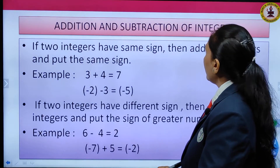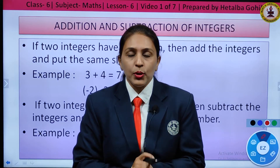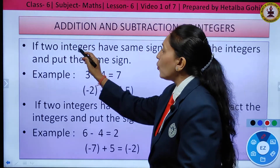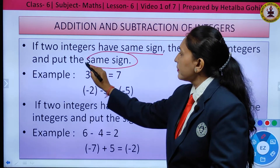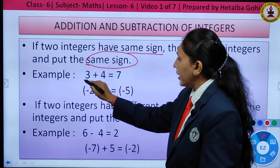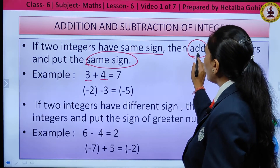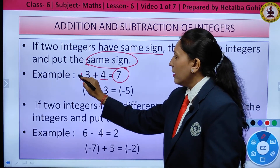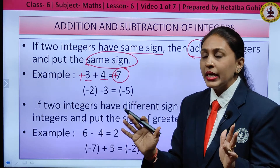Now, the basic and most important rules of addition and subtraction of integers. First rule: if two integers have the same sign, add the integers and put the same sign. For example, 3 and 4 both have the same sign — add them to get 7, and the answer is positive 7. When there is no sign with a number, we always consider it as plus.